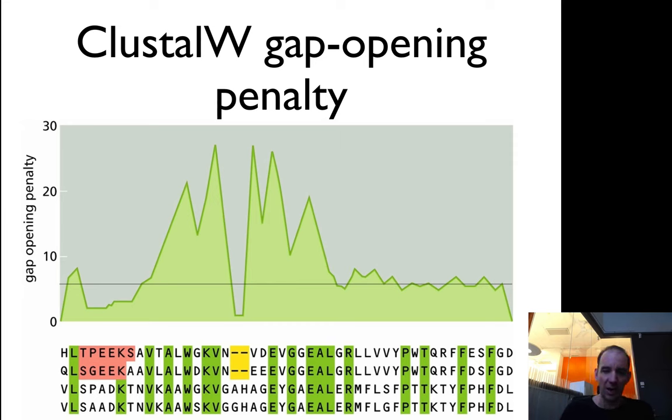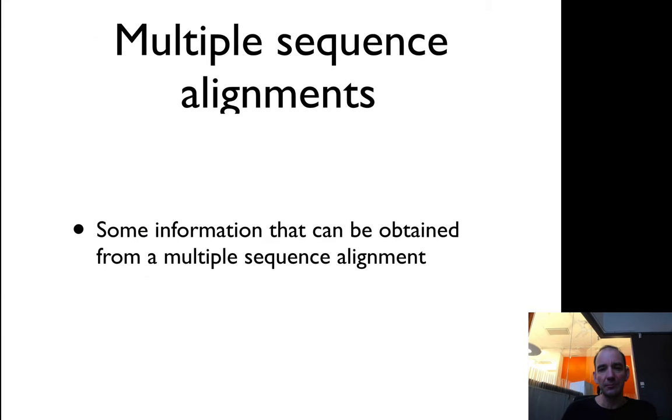Basically, you see how many gaps you have in regions, and also how conserved the positions are. If the position is conserved, you'll have high gap opening penalties—you don't want to have more gaps there. But if it's less conserved, you have a lower gap opening penalty.